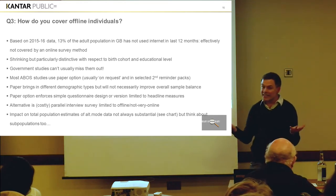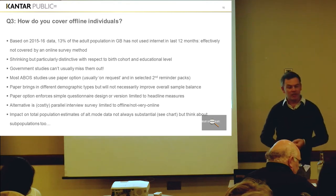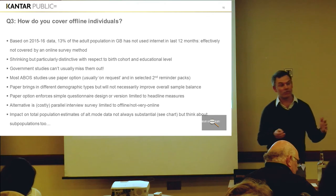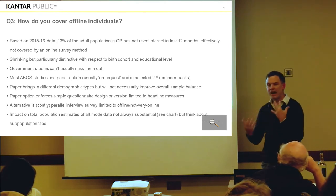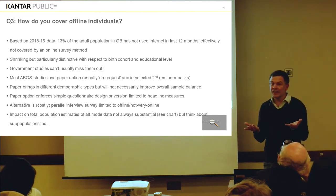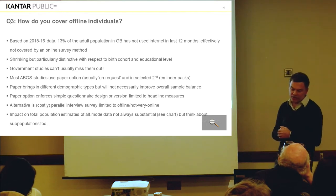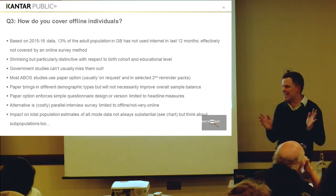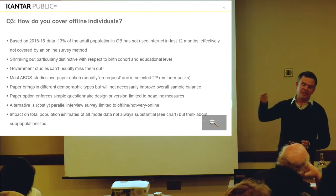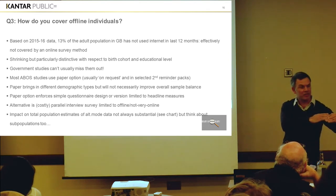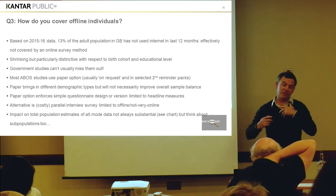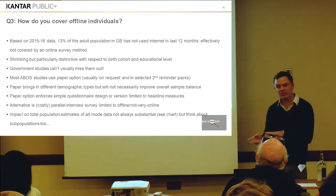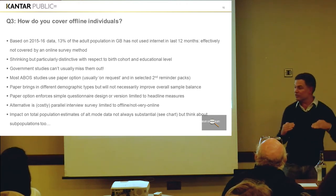Paper brings in different demographic types, certainly, and we can see that. But it won't necessarily improve the overall sample balance — the weighting efficiency, which is effectively how much you've lost as a result of having to weight the data, isn't very different whether you've included these paper questionnaires or haven't included them. So although they bring in lots of different people, the balance isn't necessarily much better. Also a paper option enforces simpler questionnaire design — a paper version that's limited to the headline measures. We often produce paper versions where there will be filters and filters in an electronic questionnaire that we have to cut. Some questionnaires have so much filtering that you just can't do them by paper.